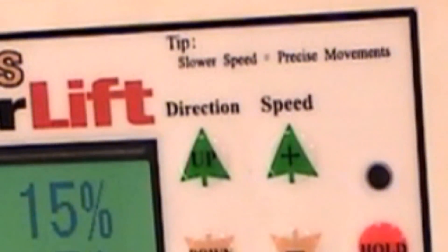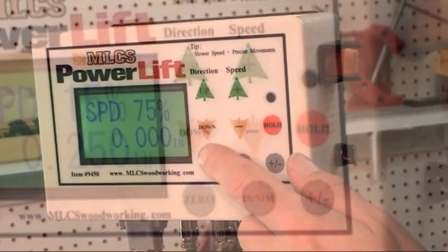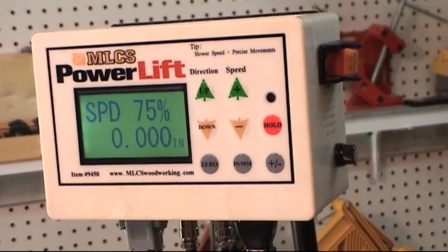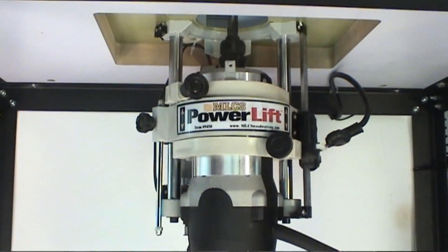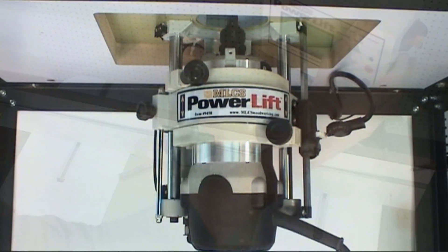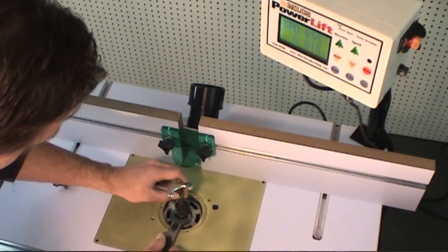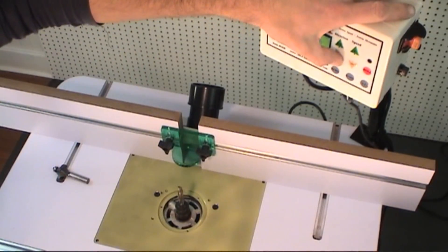The PowerLift's control panel allows you to adjust all aspects of the lift including the speed. The faster speed is good for raising your router up to change the bit. The PowerLift will raise your router all the way up so you can get a set of wrenches on there, change your bit and then lower it back down in a matter of seconds.